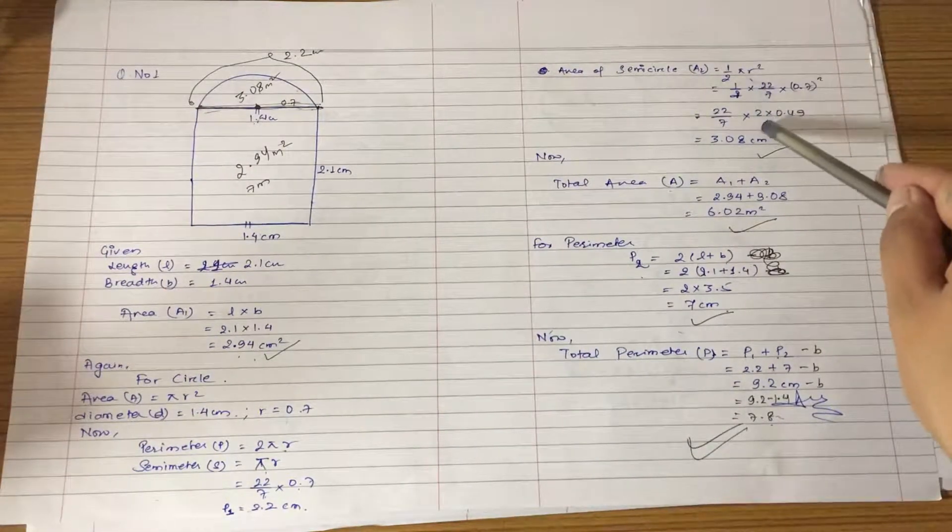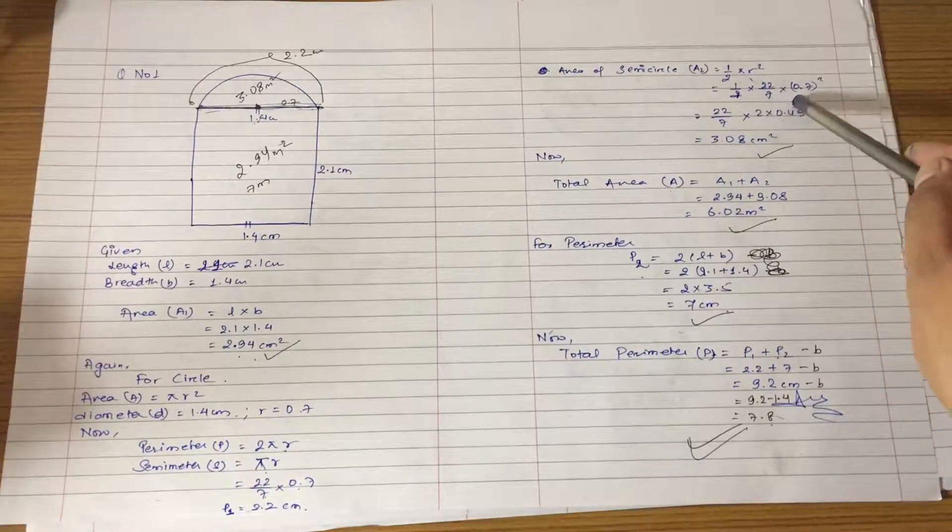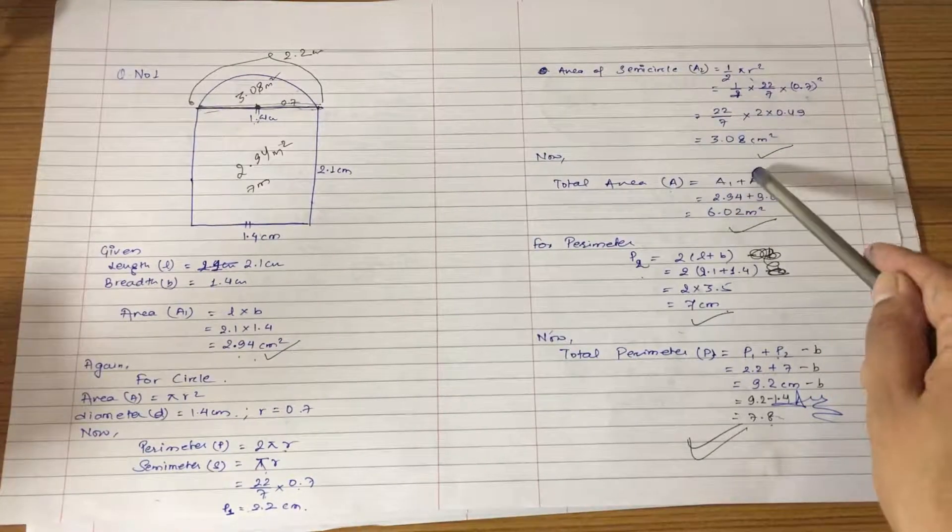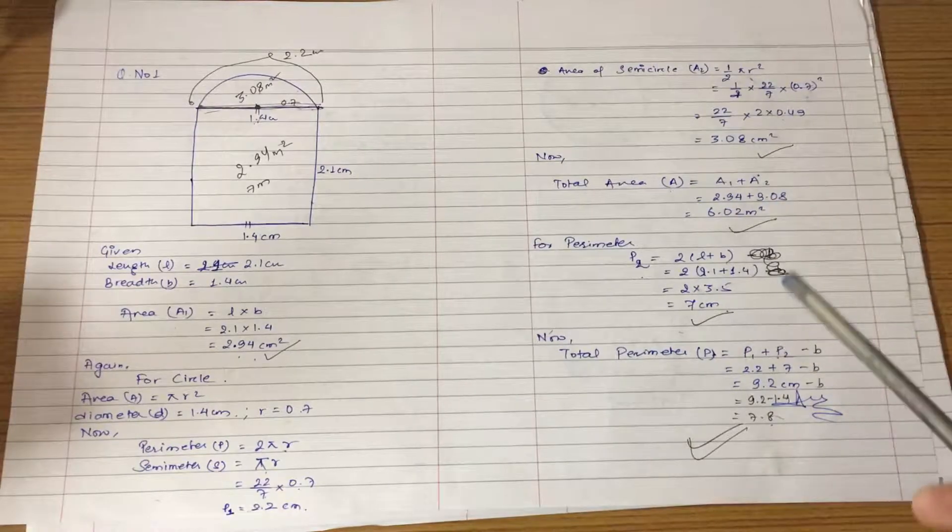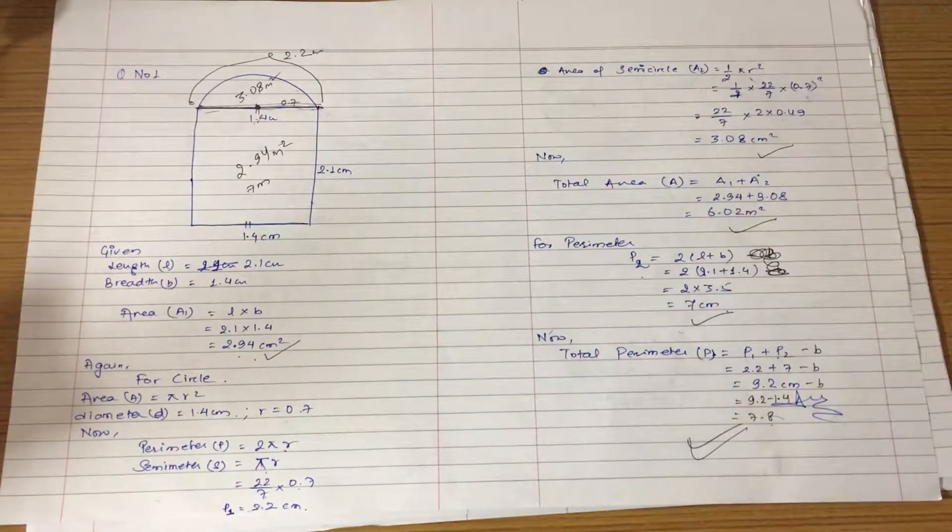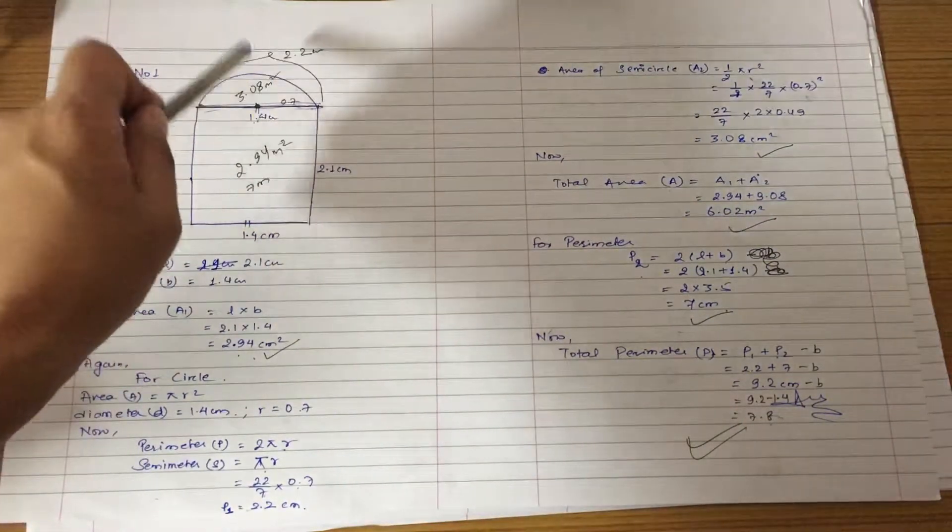Then 1 by 2 πr², and you will use the value of 0.7 square. This is the area of semi circle.